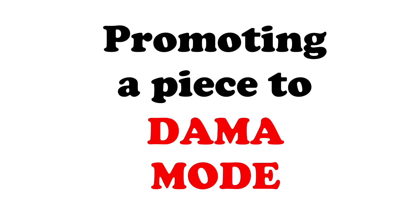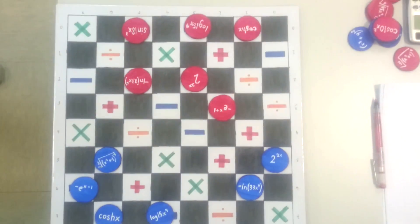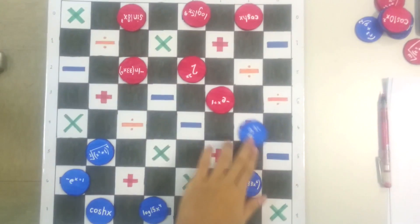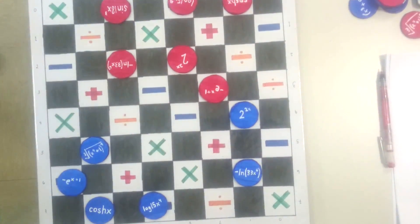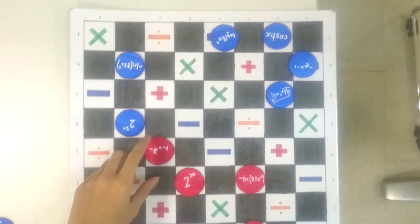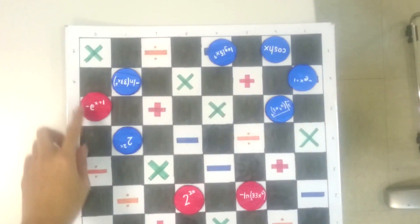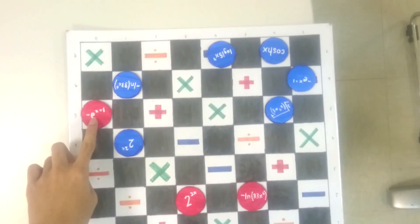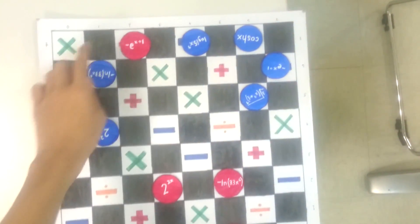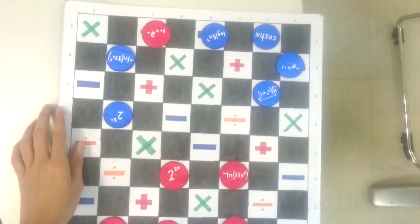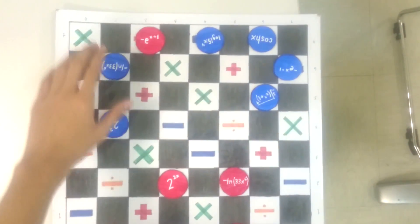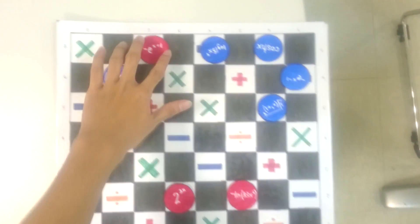Promoting a piece to Dama mode: a chip is declared Dama if the player's chip lands on the end of the opponent's side. Dama has the ability to double the score each time it takes an opponent's chip. And there we have our Dama mode piece.